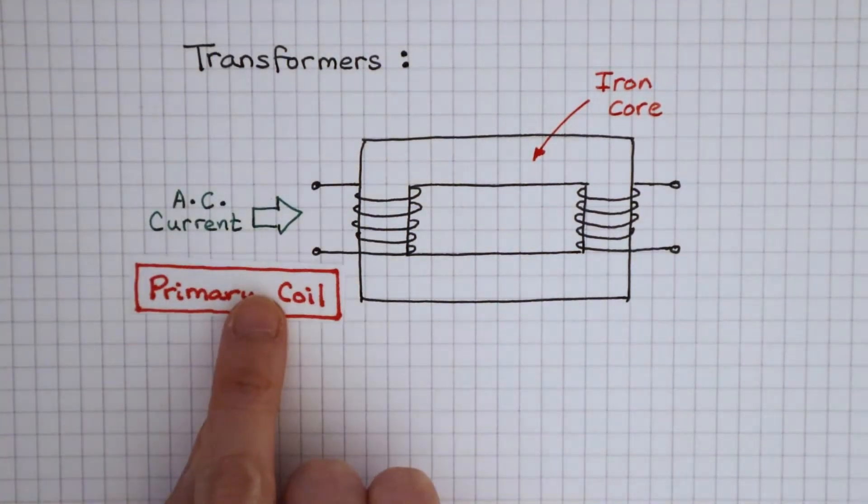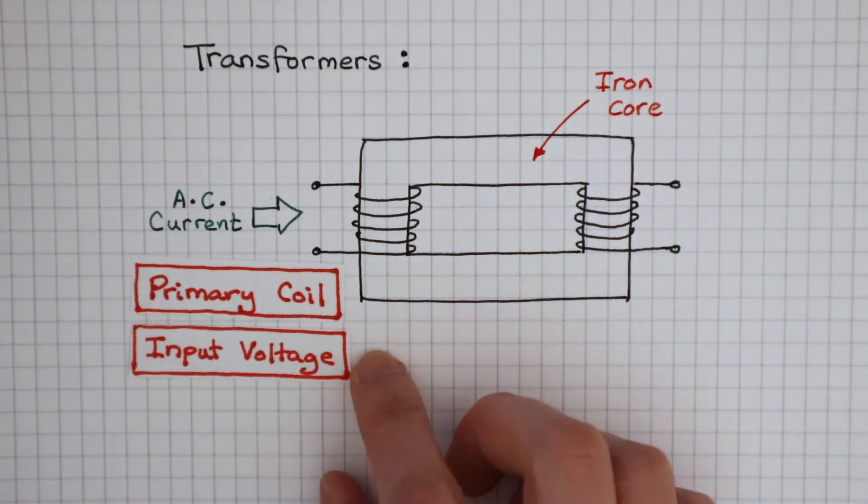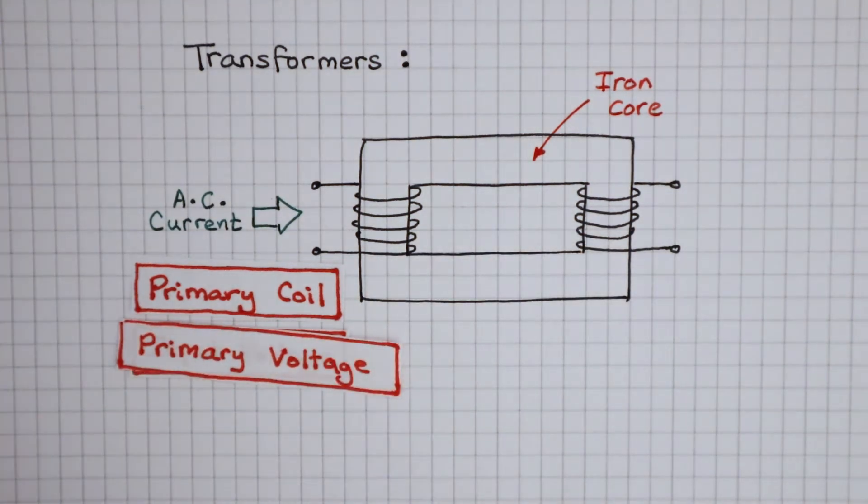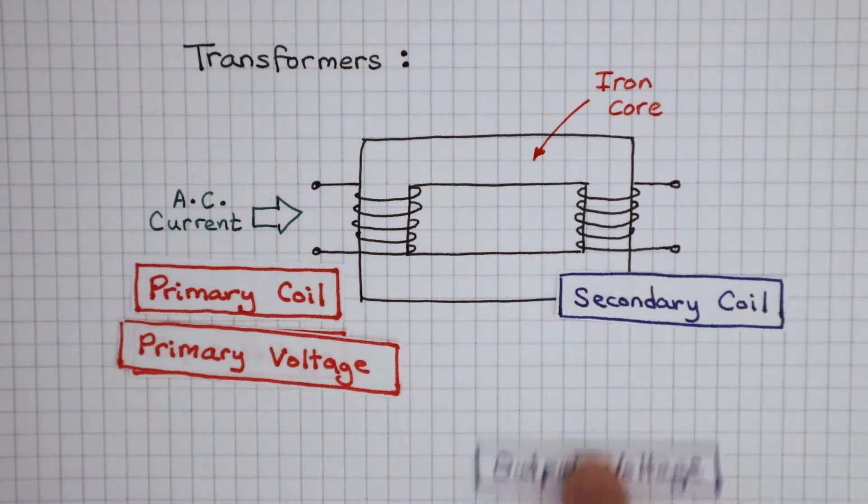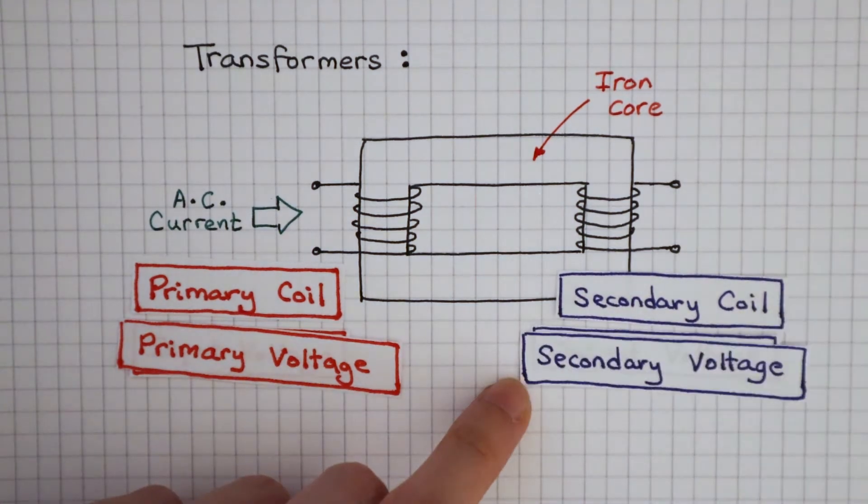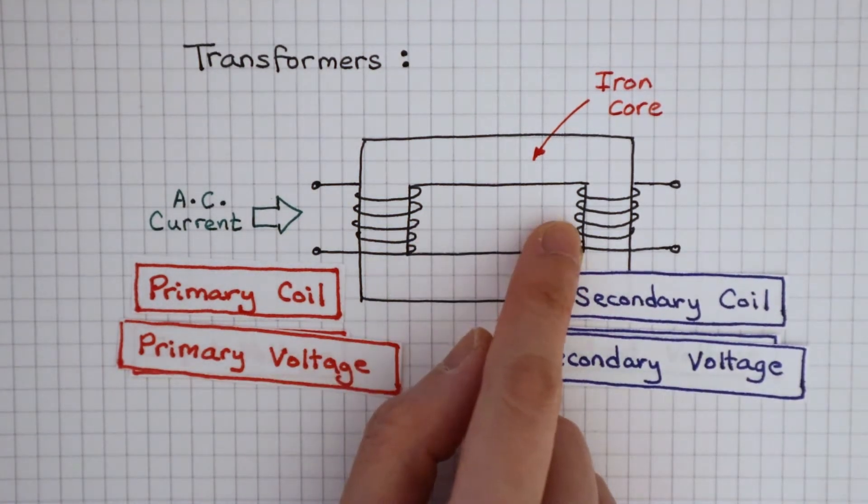A primary coil is needed for an input voltage. We can also call this input voltage the primary voltage. A secondary coil is needed for an output voltage, also called the secondary voltage. These two coils are not electrically connected.